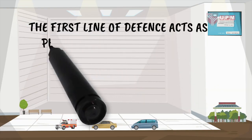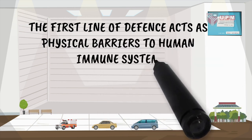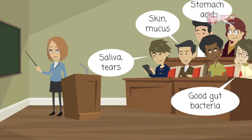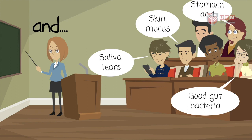The first line of defense acts as physical barriers to the human immune system. These include saliva, tears, skin, mucus, stomach acid, and good gut bacteria.